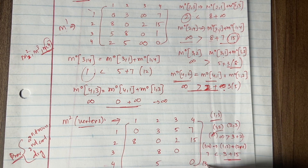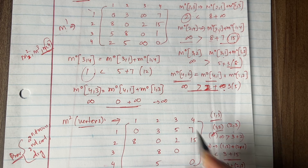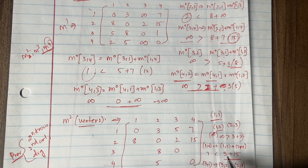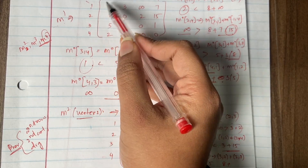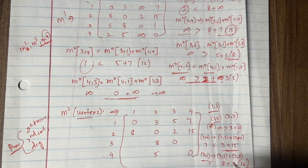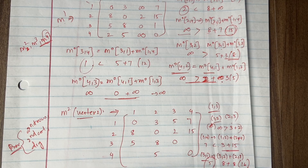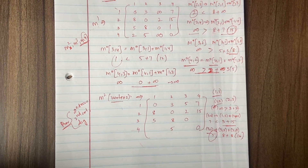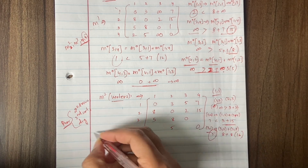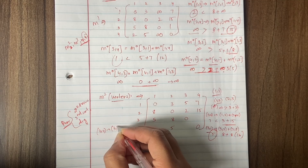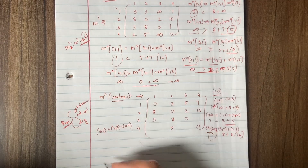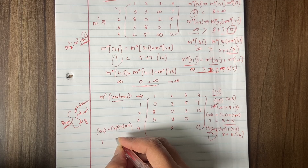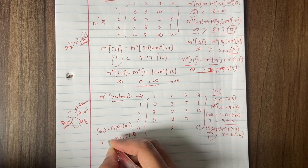For M2[3,1]: direct M1[3,1] = 5, versus M1[3,2] + M1[2,1] = 8 + 8 = 16. So 5 remains. For M2[3,4]: direct M1[3,4] = 1, versus M1[3,2] + M1[2,4] = 8 + 15 = 23. So 1 remains.